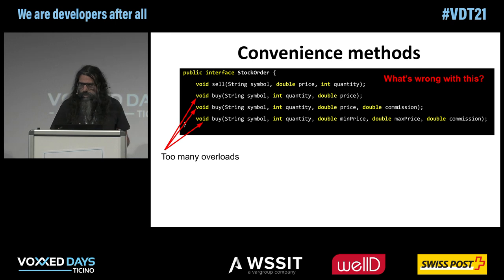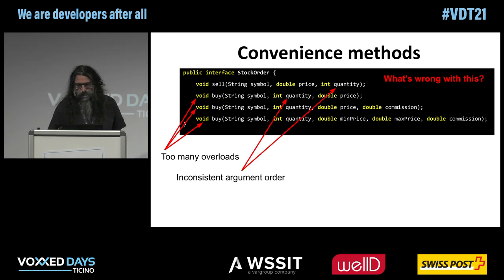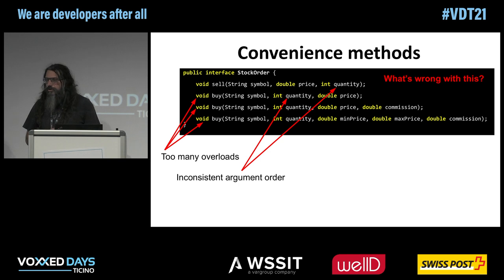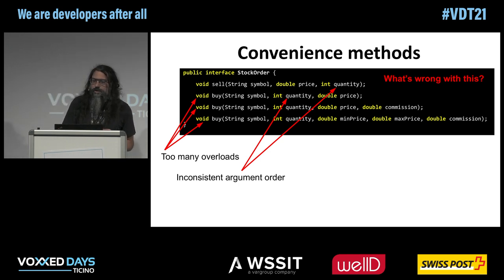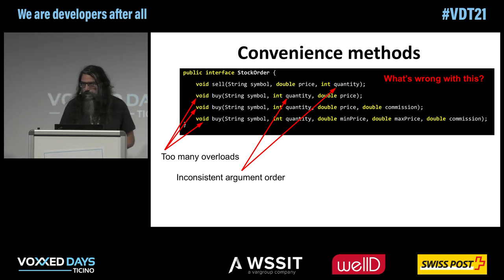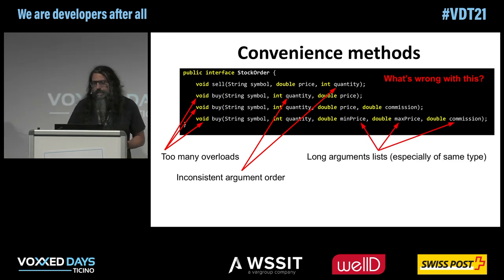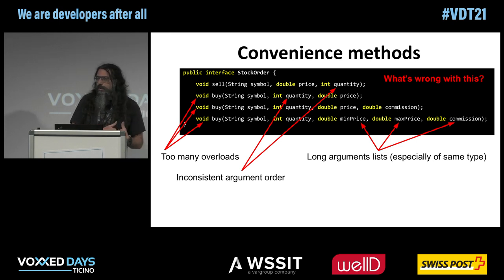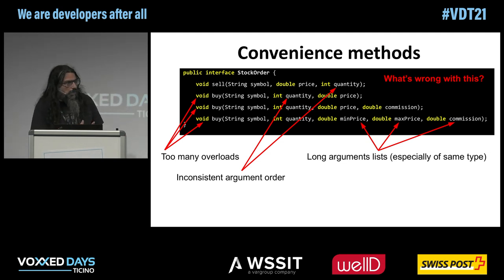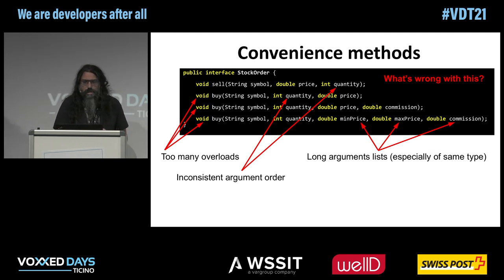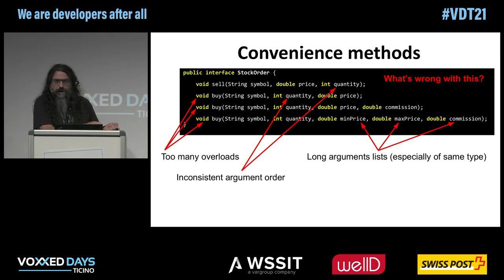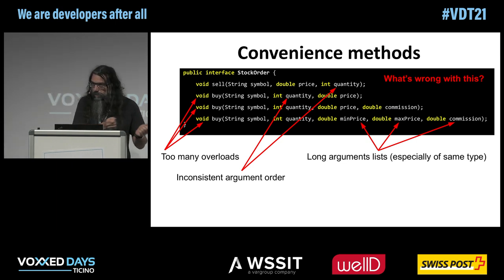First of all, these three overloads are confusing. The order of arguments is not consistent — in the sell method we put price first and then quantity, but in the buy methods we do the opposite. And we have a method with a long list of arguments, and even worse, they are of the same type, so it's very easy to put a value in the wrong position.